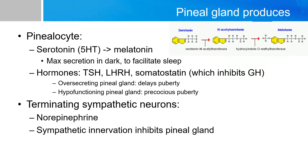The pineal gland makes different substances. The first thing that comes to mind is melatonin, which is produced by pinealocytes. Pinealocytes first make serotonin, which is then converted into melatonin. The chemical reactions involved are not critical, but the structural similarities between the two products are worth noting. Melatonin is produced in its highest amount in the dark, which facilitates sleep.